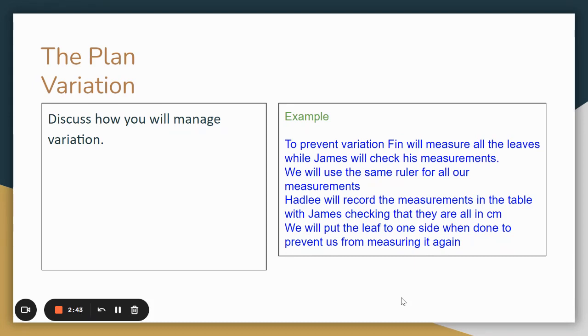That would be a variation we'd have to address. In our case we're going to prevent variation by getting Finn to measure all the leaves while James checks his measurements. We will measure using the same ruler for all our measurements so that it doesn't change because the ruler might measure differently.